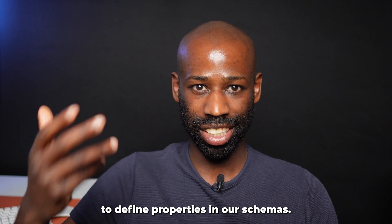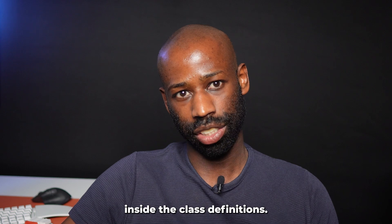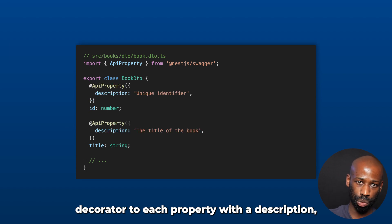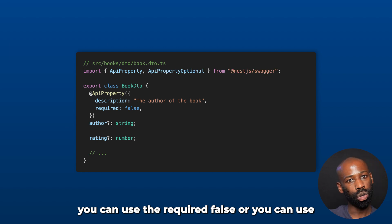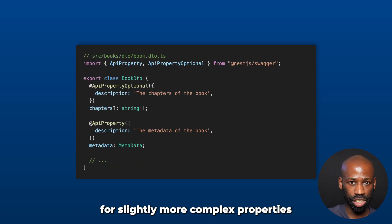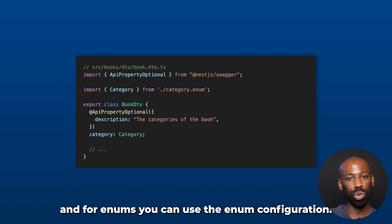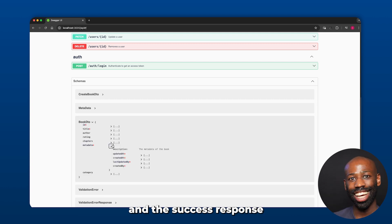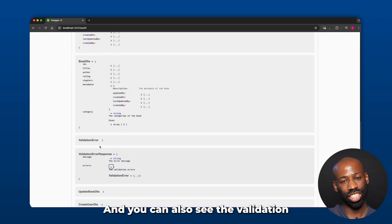To define properties in our schemas, we use the ApiProperty decorator inside class definitions. Starting with the Book DTO class, you add the ApiProperty decorator to each property with a description. For optional properties, you can use required: false or the ApiPropertyOptional decorator directly. For more complex properties such as arrays and nested objects, you can define them using the type configuration, and for enums you can use the enum configuration. Now you can see all the properties in the Swagger UI — the success response model has all properties defined, and you can also see the validation error response model.